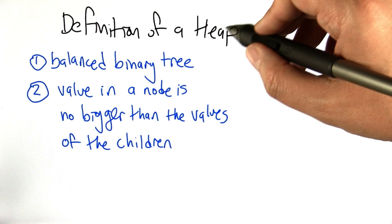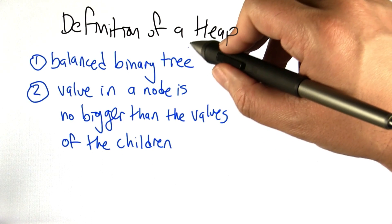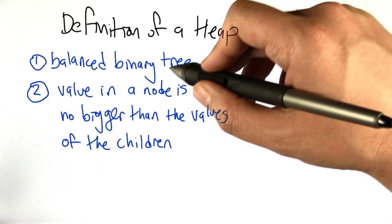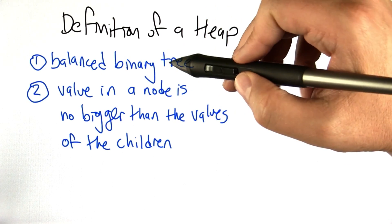So a heap is a kind of data structure, a bunch of values that actually is a bunch of values arranged in a kind of a graph. Specifically, it's a balanced binary tree.